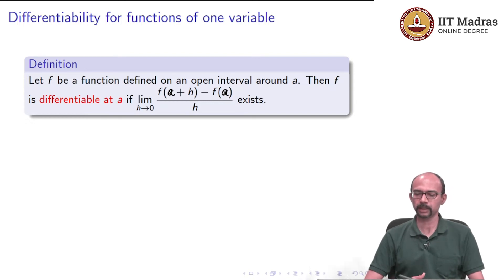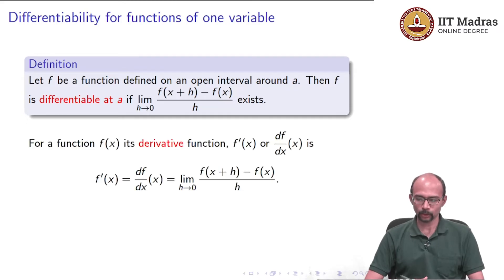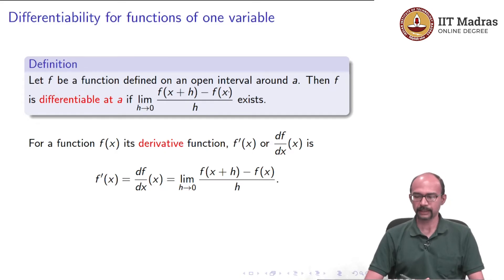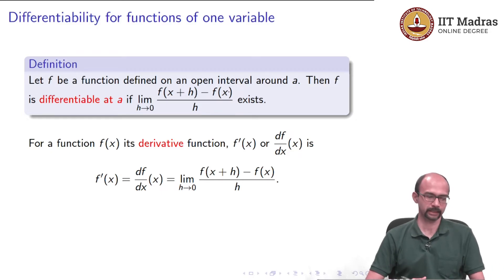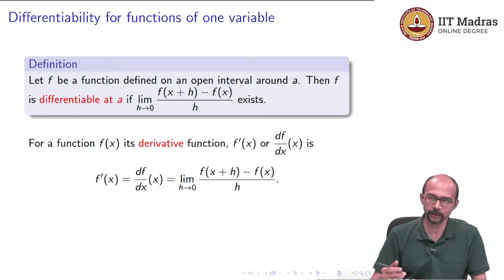So this is the definition: the limit as h tends to 0 of f(a+h) minus f(a) divided by h exists. Once that happens, we define the derivative function: f'(x) is the limit as h tends to 0 of f(x+h) minus f(x) divided by h. We have seen this in great detail in one variable calculus and have also used the same idea in computing partial and directional derivatives.